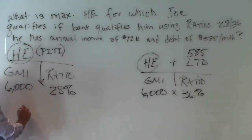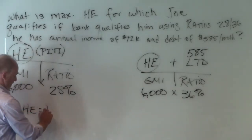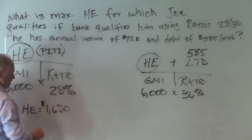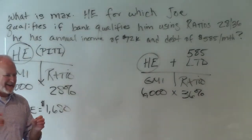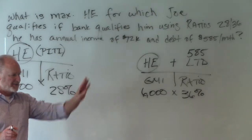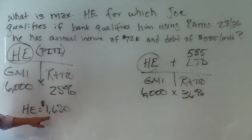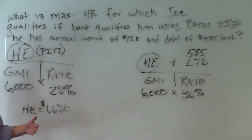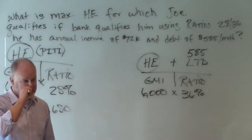$6,000 times 28% — somebody help me with that. $1,680. Now stop for just a second. One of the things I'd really like for you to do as you're going over these qualifying problems is ask yourself: what is it that I just found? This is the maximum housing — the maximum monthly payment he can have, including principal, interest, taxes, and insurance — based on his income only.